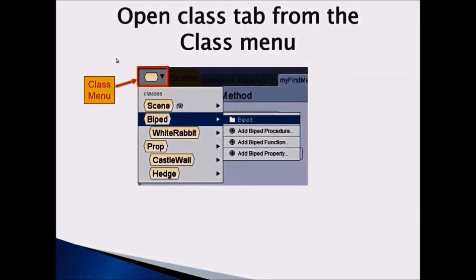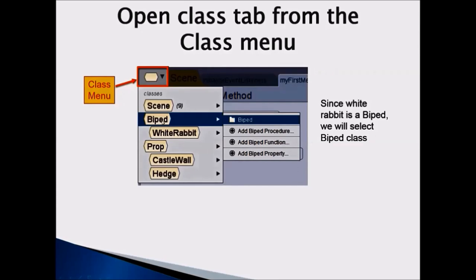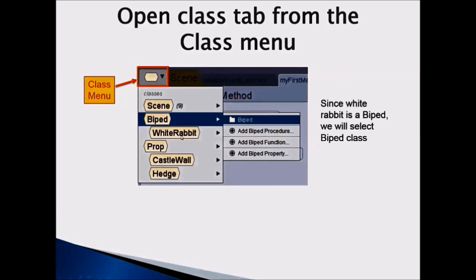Now how do I create a procedure? We open the class tab from the class menu. The first step is to go to the class menu. Since our White Rabbit is a biped, we select the biped class. When you put your mouse over the biped class, you will see a biped tab — click on it. It's always a good idea to make general actions for a biped so that all biped objects can hop.